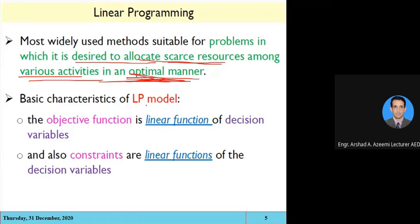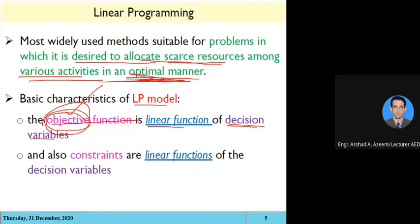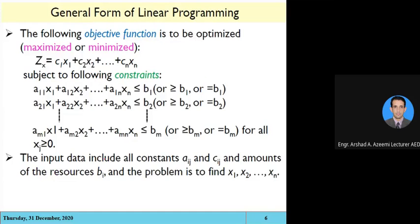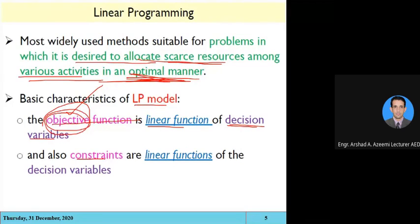The best characteristics of a linear programming model is the objective function — the thing which you have to maximize or minimize. It will be a linear function of the decision variables. There will be resources that you have to utilize to maximize or minimize your objective. There will also be constraints because if a limited amount of resources is available, you cannot go beyond that availability.